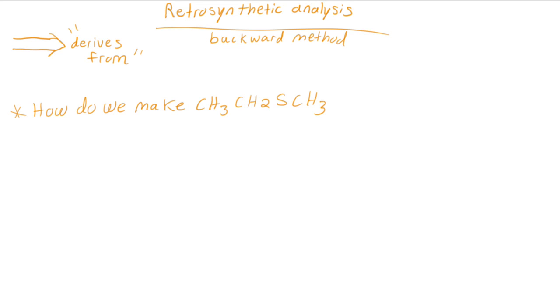So we are starting off with our product and we are trying to figure out what our reactants are or our starting materials. And we use this really large arrow to indicate what we are deriving from.